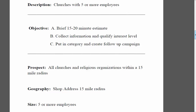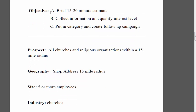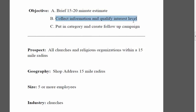Our objective is what we're trying to accomplish. First is a brief 15-to-20-minute estimate — we want to come out and give them a carpet cleaning estimate. The second goal is to collect information and qualify interest level. The third is to put them in a category and create a follow-up campaign. For example, if I speak with the business manager and she says they've had the same custodian for 20 years, I'll put that person in unqualified.